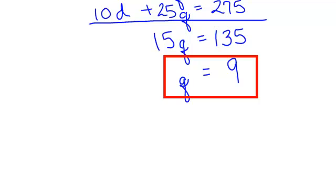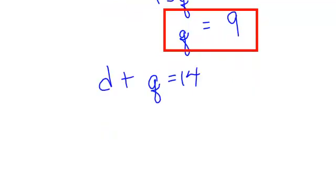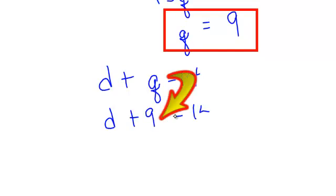I have my q, but I have two variables. I need to find my dimes. I will go back to one of my top equations, one of my easier ones. I will choose d plus q equals 14. That was my first equation. I now know that my quarters are 9. So I will substitute 9 for q. Subtract 9 from both sides and d will equal 5.